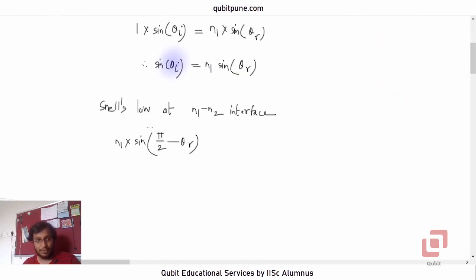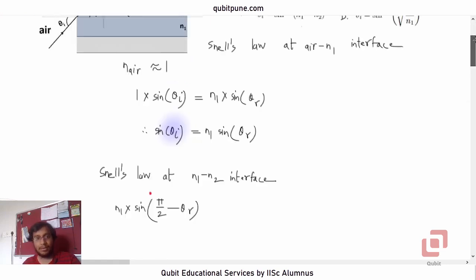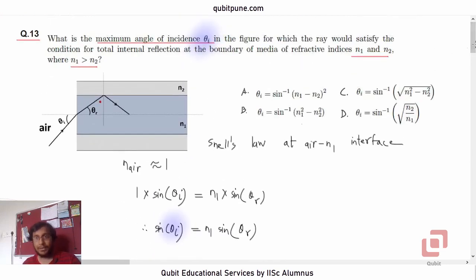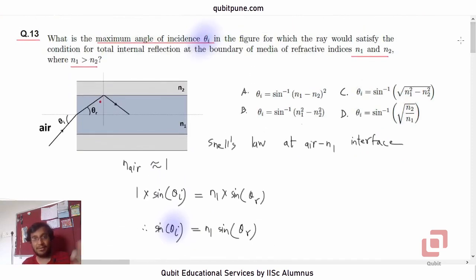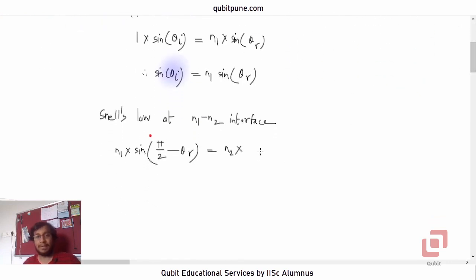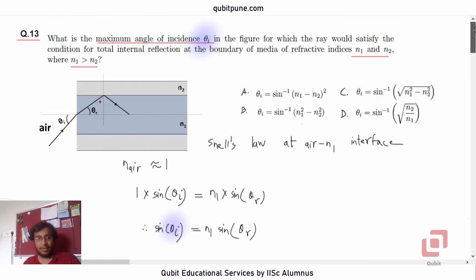Let me put a dot here so we understand it, the red dot, equals n2 into... now we want total internal reflection condition. What does that mean? That means this is sine 90 for total internal reflection, TIR.